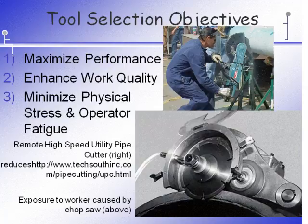When selecting hand tools, the main objectives are to maximize performance of the tool and the worker, to enhance work quality so that the part being made, cut into, or refinished is of the highest quality and that quality is repeatable across different workers, and to minimize physical stress or fatigue on the operator. The example at the top shows a gentleman using a very large, heavy chop saw to cut through a piece of water conduit, and although he's doing it on a set of workhorses, typically this work would be done below grade in a trench if a water main had broken.